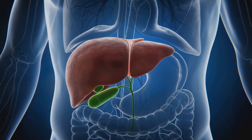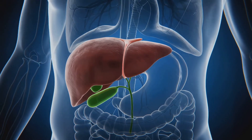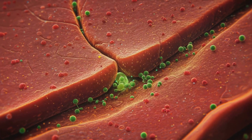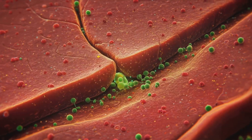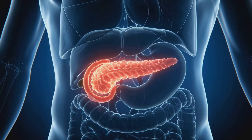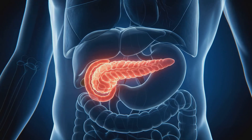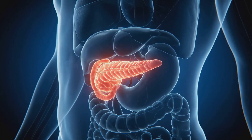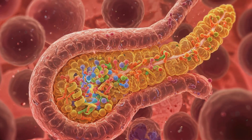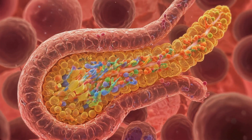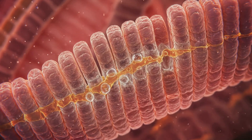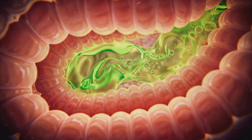The liver produces bile acids from cholesterol, stored in the gallbladder. Bile is released into the duodenum to emulsify dietary fats. Pancreatic enzymes — including trypsinogen, chymotrypsinogen, amylase, and lipase — are secreted into the duodenum. Bicarbonate neutralizes gastric acid, optimizing pH for enzyme function.